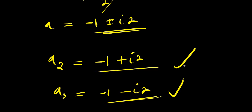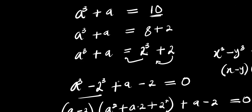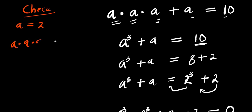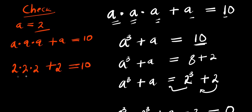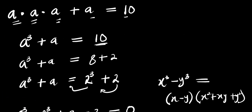These are the two complex solutions for a, and we also have one real value for a, which is a equals 2. Let's verify by inserting this real value: a times a times a plus a equals 10. With a equals 2, we have 2 times 2 times 2 plus 2, which is 8 plus 2, equals 10. And this equals 10 — this value of a has satisfied the equation.